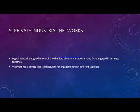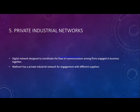The next form a business to business model can take is private industrial networks. These are digital networks designed to coordinate the flow of communication among firms engaged in business together. When two firms conduct business — one acting as supplier, one as buyer — there is always a need for efficient communication. That communication can take many forms: order placement, quality feedback, and so on.